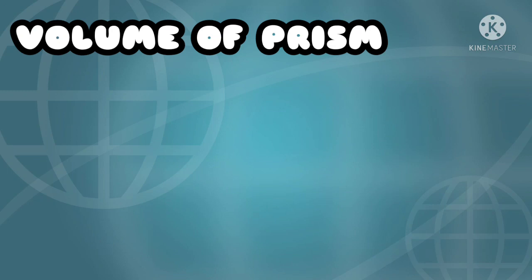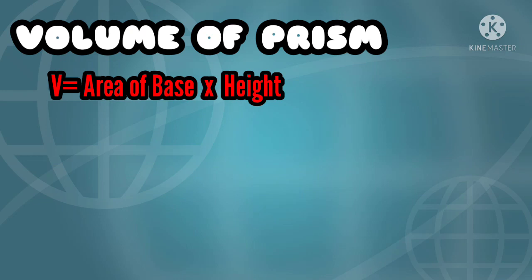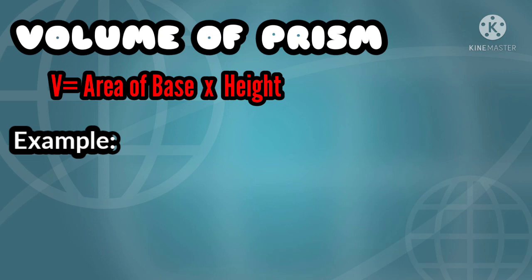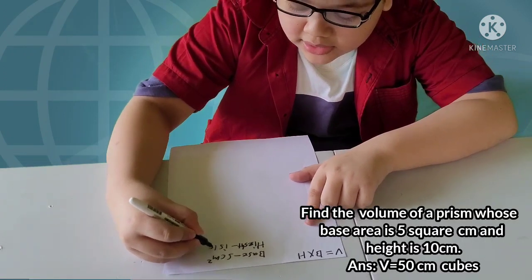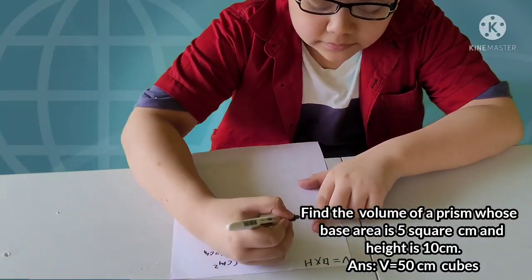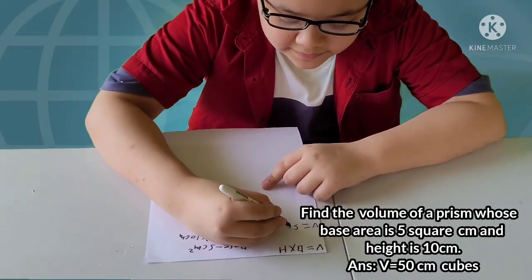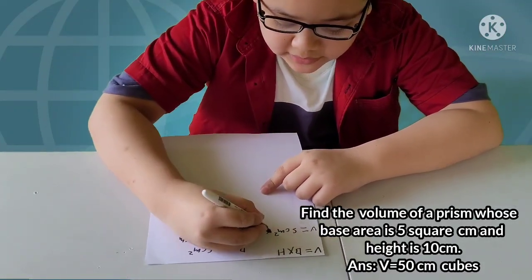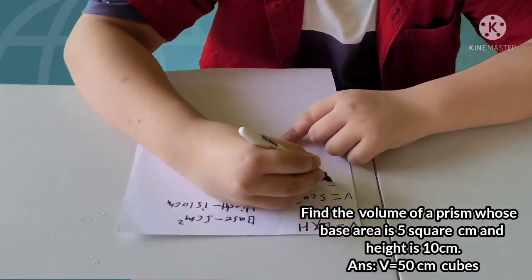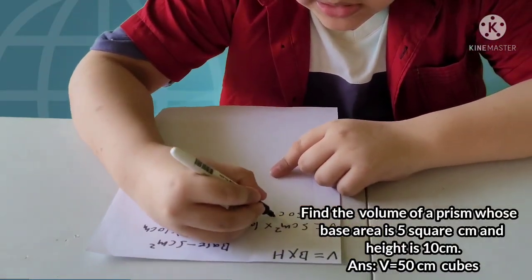First, we have volume of prism. To calculate the volume of a prism, we use the formula: volume equals area of base times height. Example: find the volume of a prism whose base area is 5 square centimeters and the height is 10 centimeters. Volume equals 5 cm² times 10 cm equals 50 cm³.